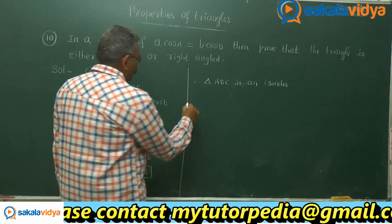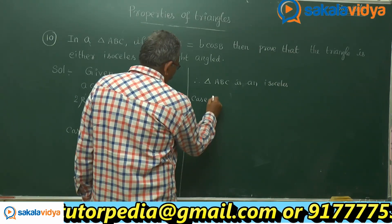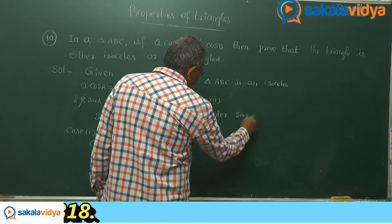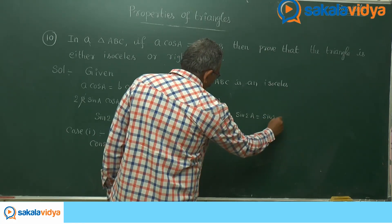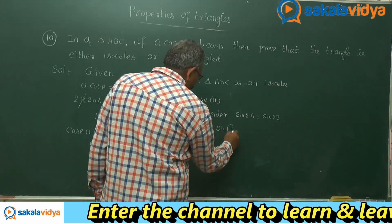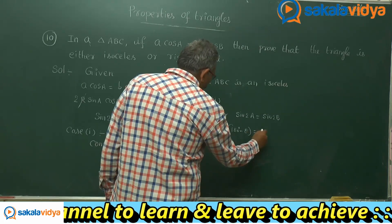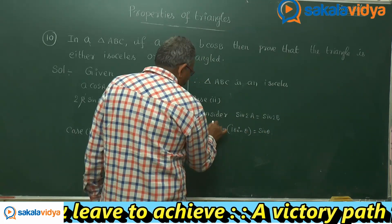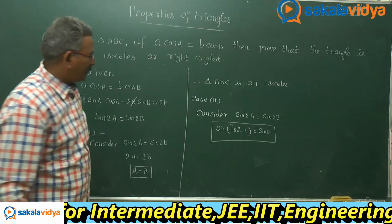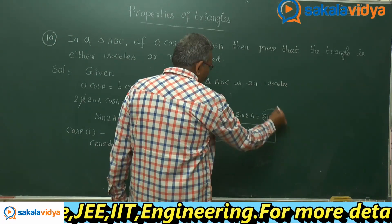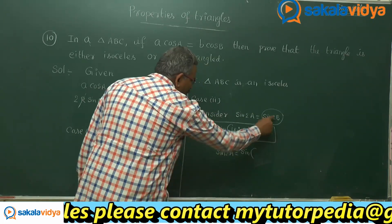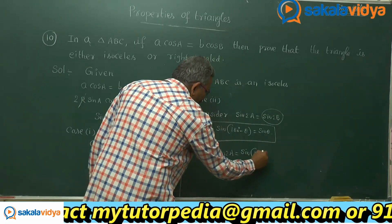Now consider case 2. Consider sin2A equals sin2B. We use the formula: sin(180° - θ) equals sinθ, because 180° - θ lies in the first quadrant and sine is positive. So sin2B can be replaced as sin(180° - 2B). Thus, sin2A equals sin(180° - 2B).